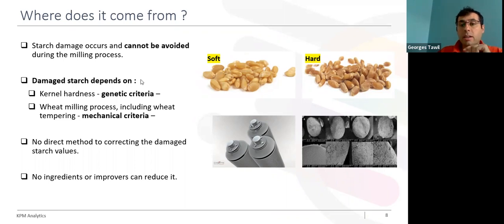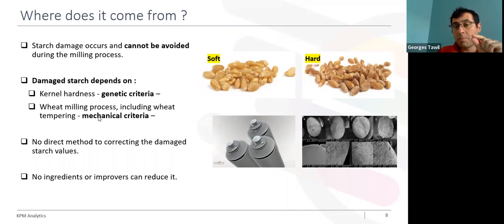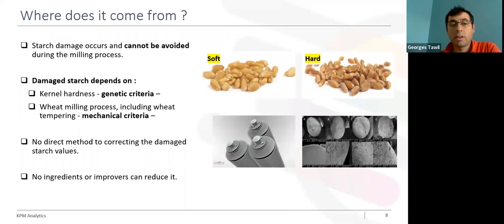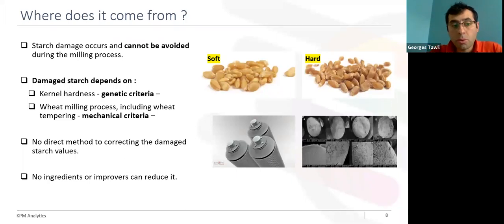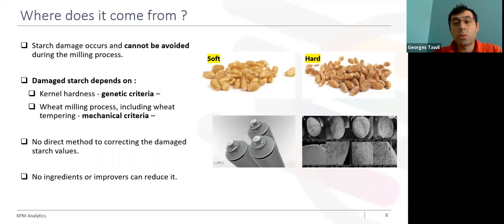The second criteria is the mechanical one — meaning the wheat milling process or milling diagram itself, including the preparation and conditioning of the sample. Also, you need to know that there is no direct method for correcting damaged starch, and there is no improver or ingredient that can reduce its amount.